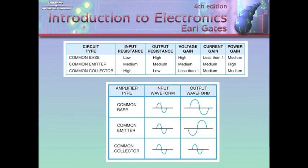For example, a public address system inside a building — a PA system — typically uses higher voltage, like 70 volts. If we're driving a PA system and amplifying to drive speakers at 70 volts, we'd probably use common base because of its high voltage gain. So you've got to look at what you're doing and what the application is — that's why this table is invaluable.